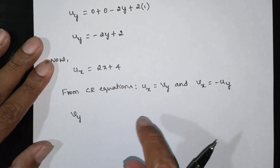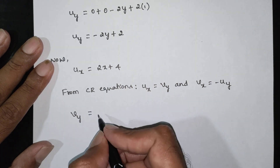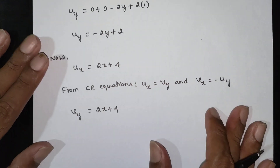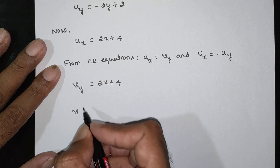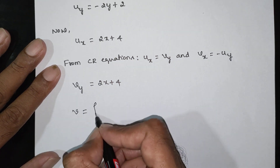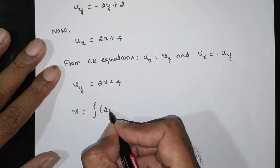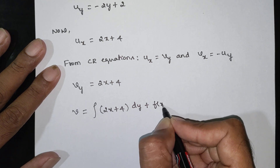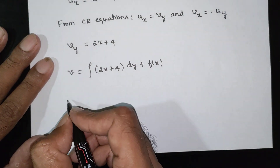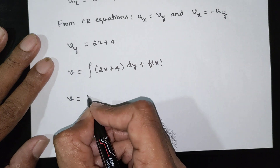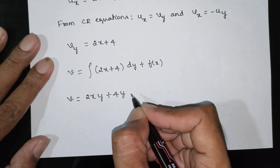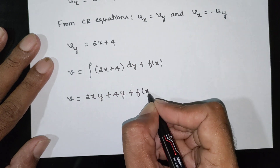Using the CR equation vy equals ux, we have vy equal to 2x plus 4. To find v, take the integral with respect to y: integrate 2x plus 4 with respect to y, adding f of x. Since 2x is constant with respect to y, this gives v equal to 2xy plus 4y plus f of x.